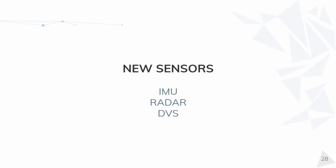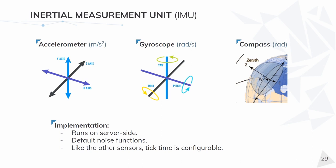Now let me present the new sensors. I will give a brief introduction to the IMU, the radar, and the DVS. Let's start with the simplest one. The IMU refers to an Inertial Measurement Unit. It is composed of an accelerometer, a gyroscope, and a compass. It runs on the server side, it has default noise functions, and like the other sensors, the tick time is configurable. I'm sure you will find it handy to have it integrated natively.